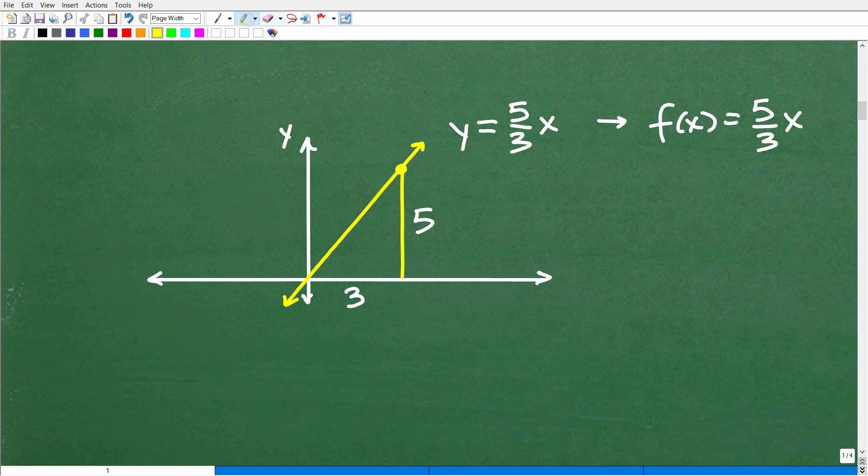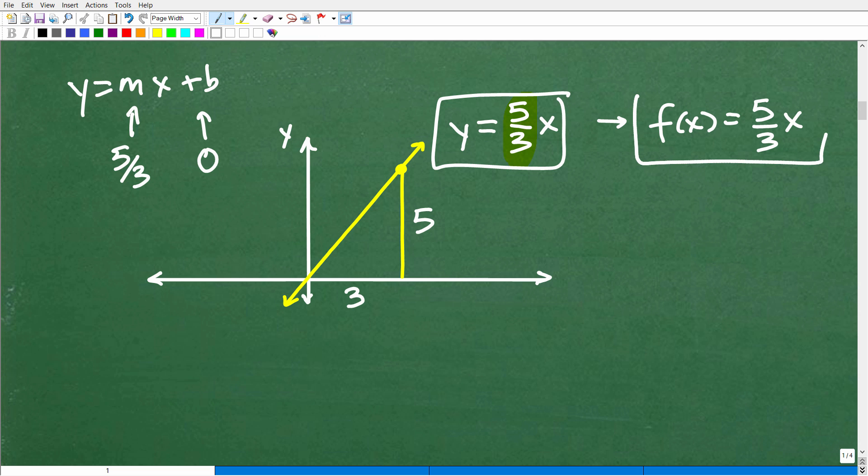All right, so here it is. Here's our slope. Again, let me just write this out here. y equals mx plus b. Our m was five thirds and our b is zero. So I end up with this. So this is my linear equation of this line. Or I could write this as a linear function. It doesn't make a difference. But they're basically describing this line.